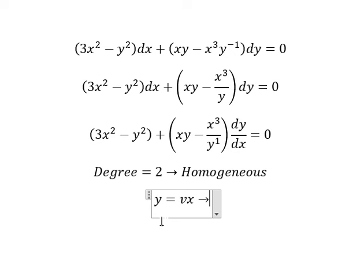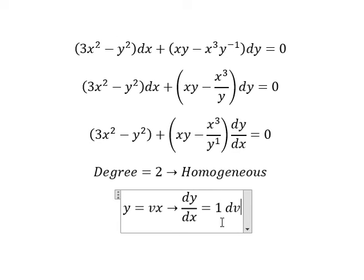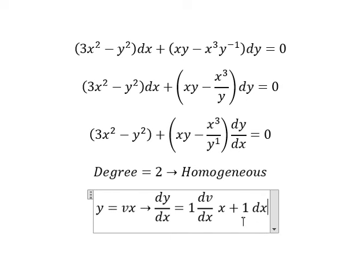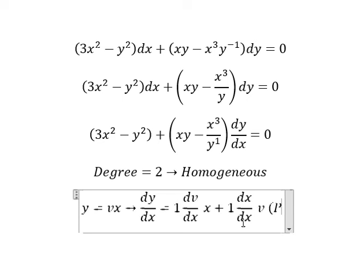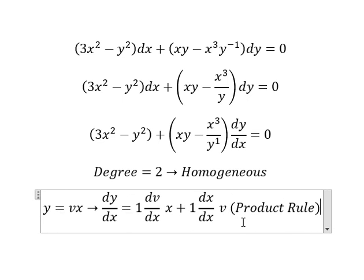Next we need to differentiate both sides. We have dv over dx multiplied by x, plus v, multiplied by dx over dx — and that is the product rule of the differentiation.